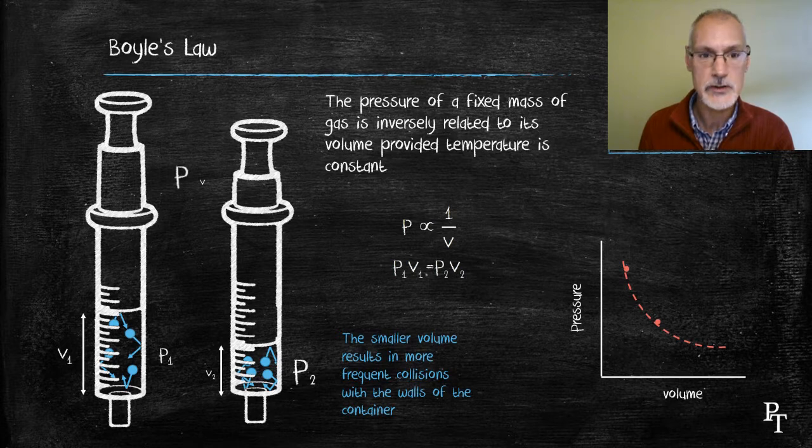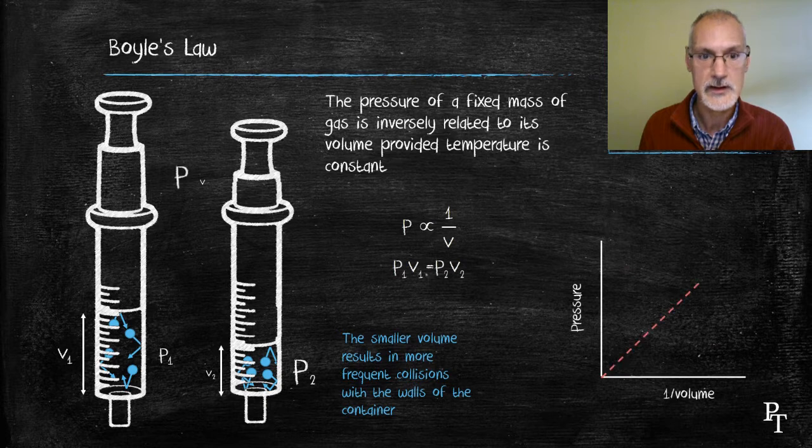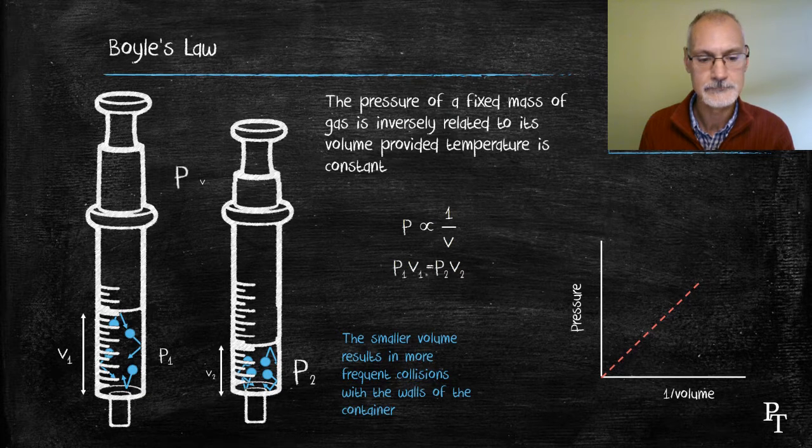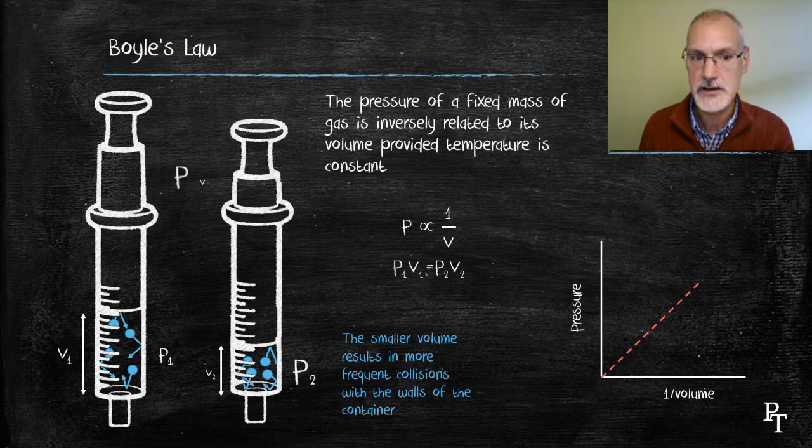Some people will attempt to plot it this way, where we replace volume with 1 over volume, and we get a straight line. That allows us to say that the pressure is proportional to 1 over the volume. So Boyle's law states that pressure and volume are inversely related, provided the temperature is constant.